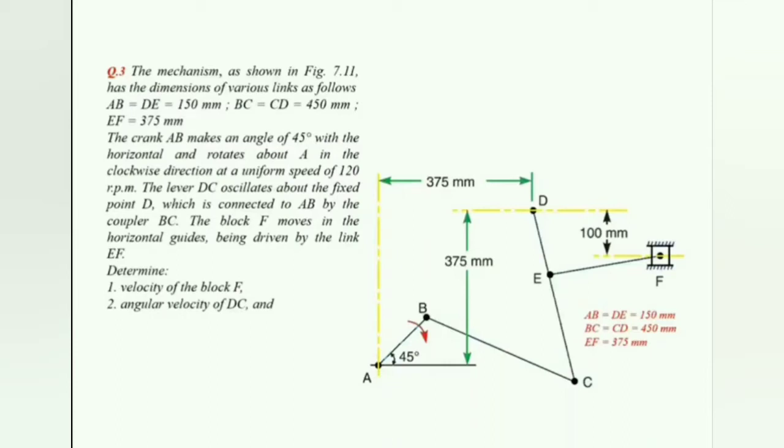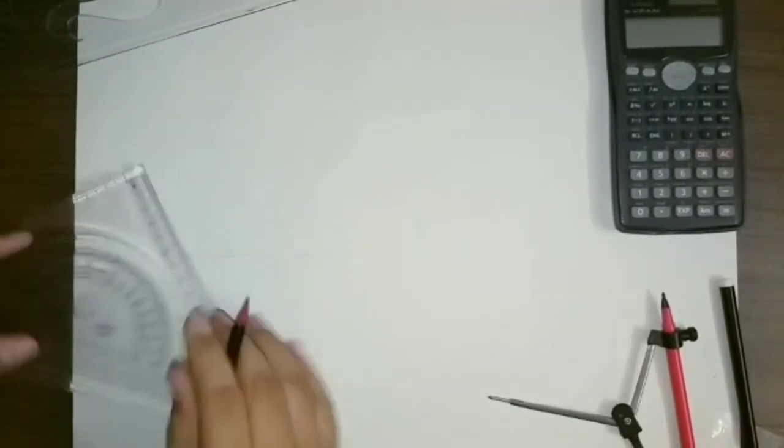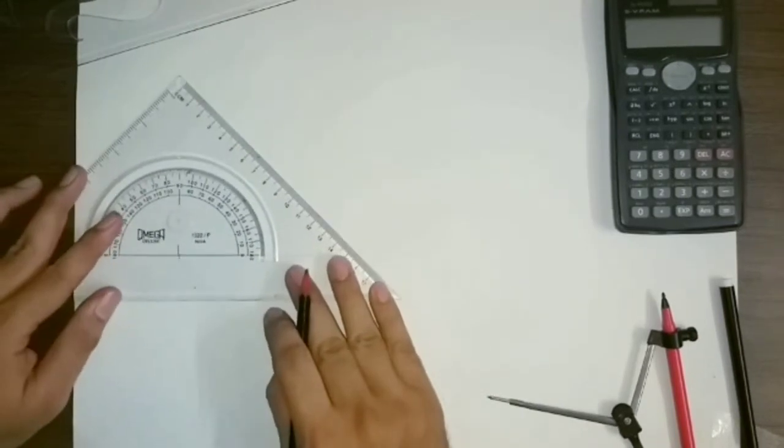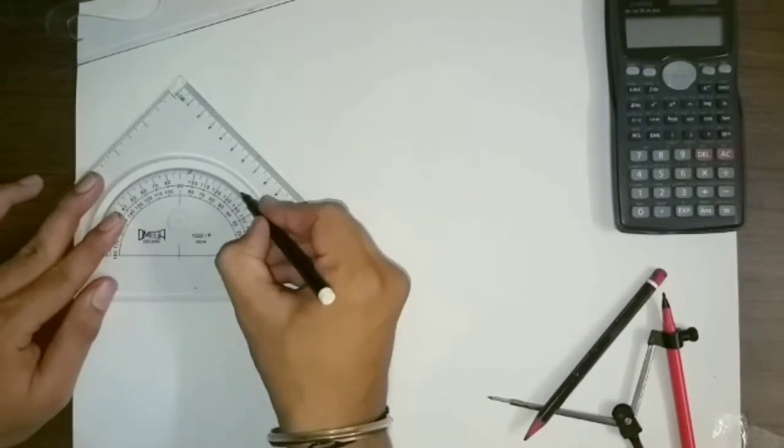First we will make the configuration diagram. So first make a reference line and mark the center point of the input link. Now next you have to mark the angle of 45 degrees.